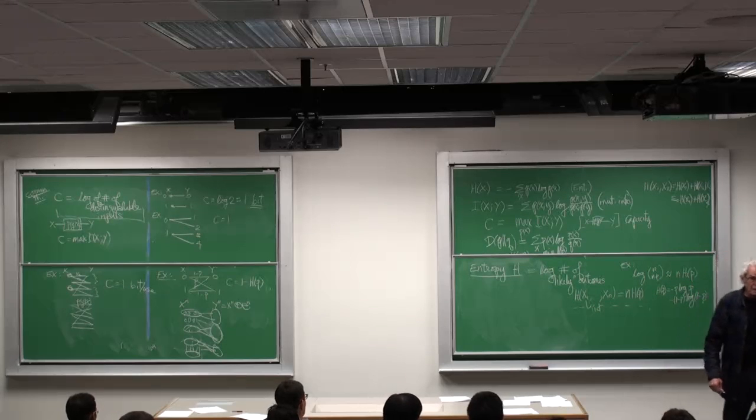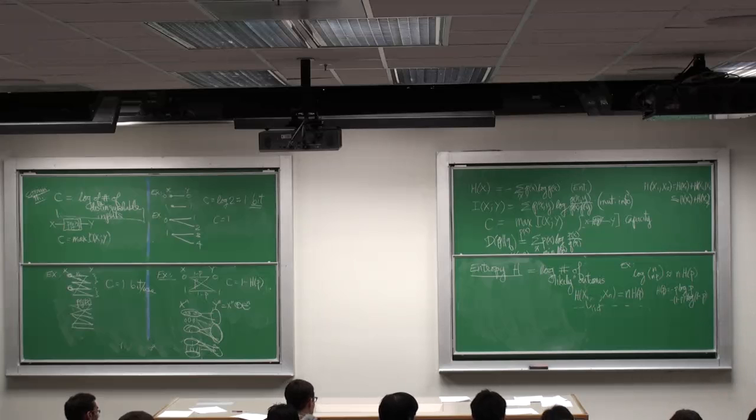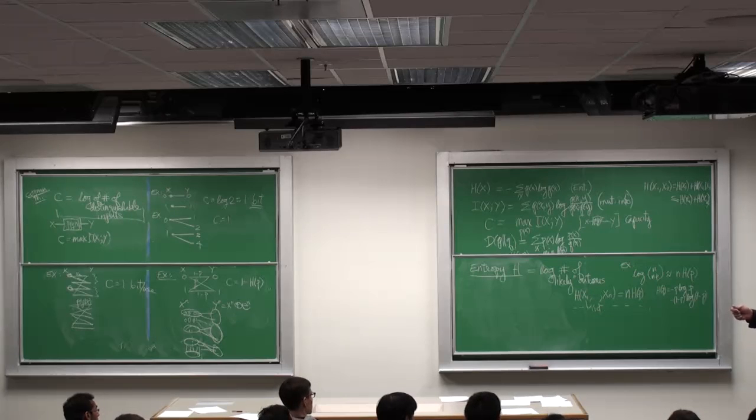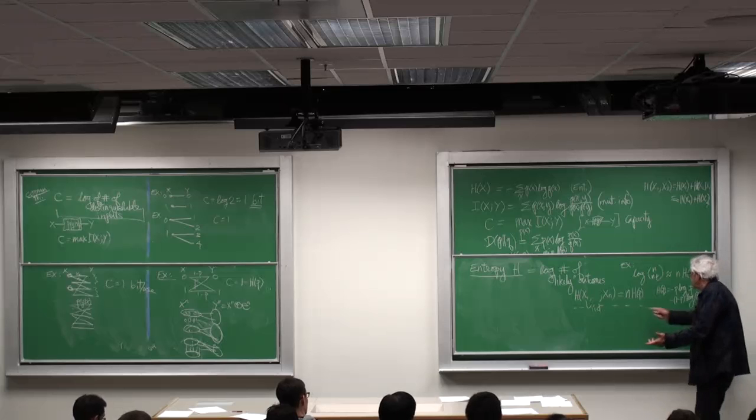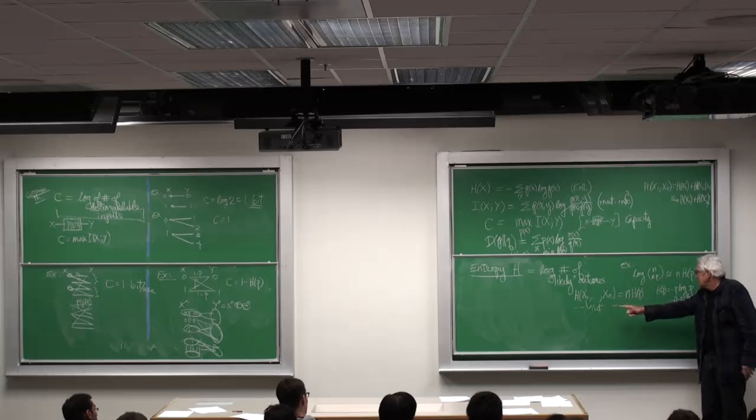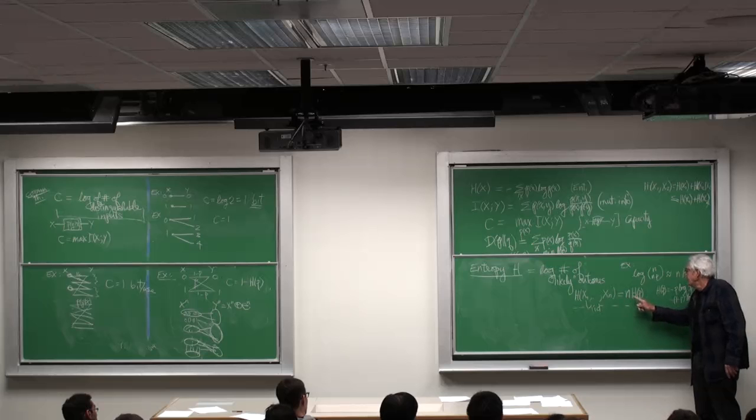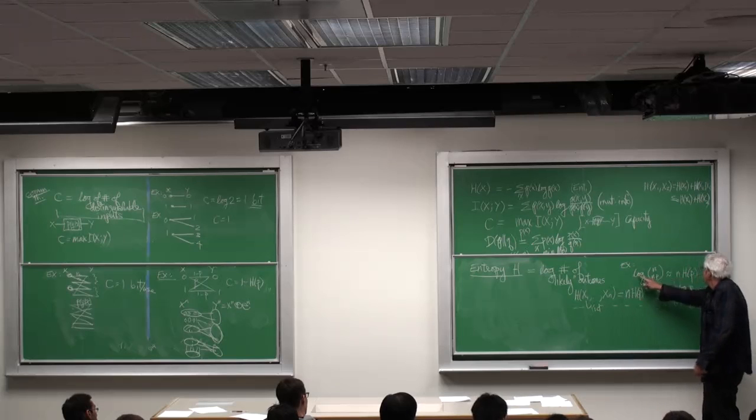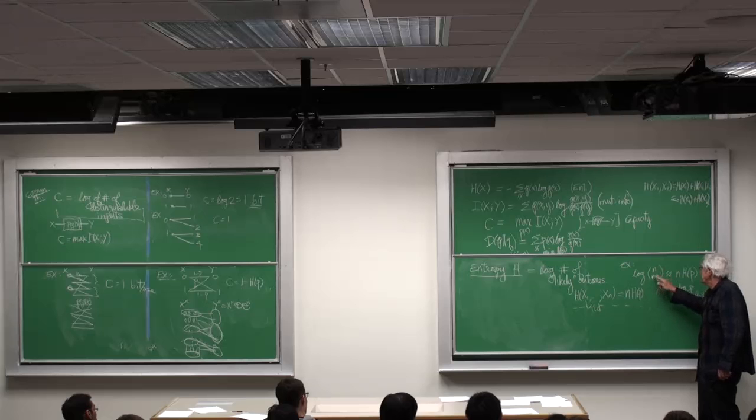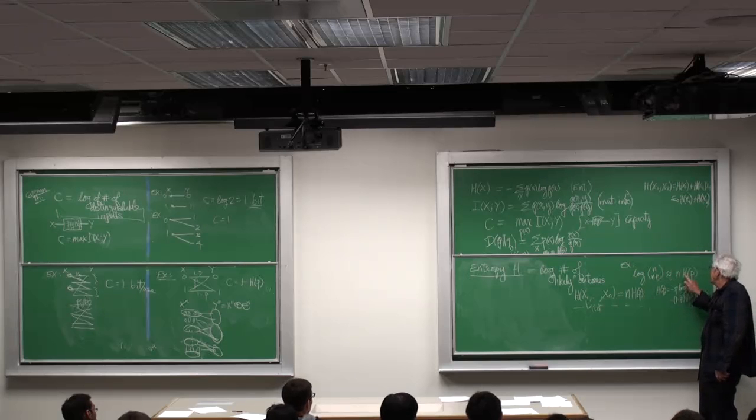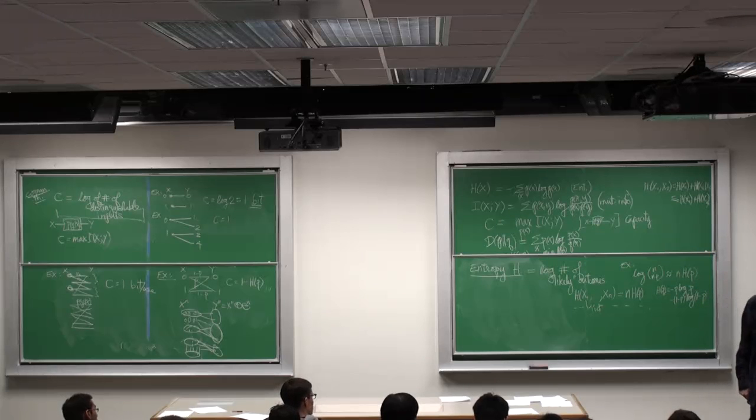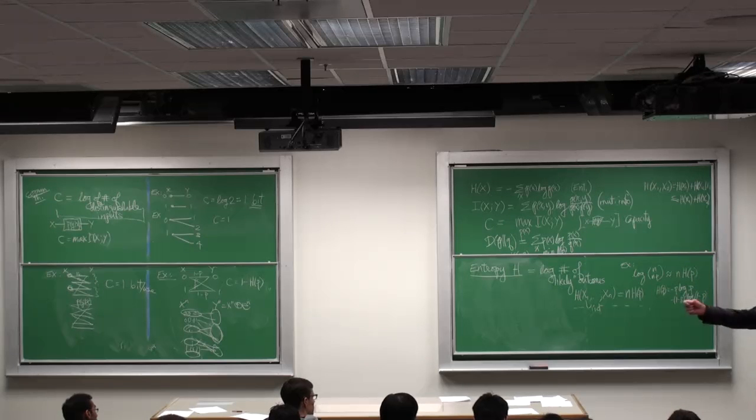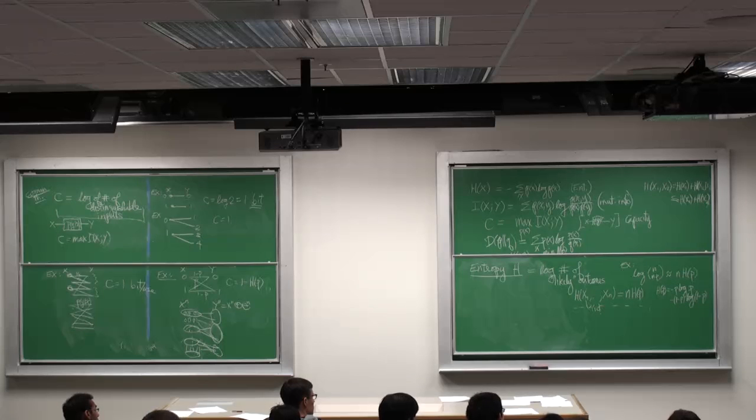By the way, that immediately gives you data compression. I had n bit sequence of coin flips with parameter P. And yet, I can narrow things down. I say it's overwhelmingly likely that there are roughly np heads in it. And the number of sequences with np heads is 2 to the n H of P. The log of that is n H of P. So basically, I have a description for the outcome of these n coin flips that's only n H bits long.